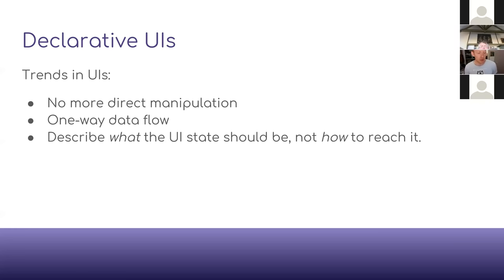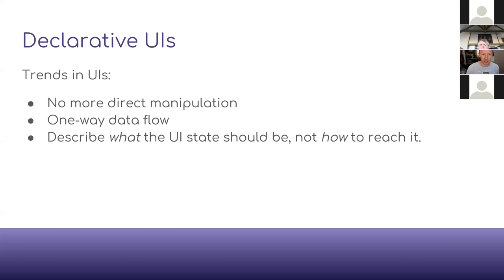My intuition is all about declarative UIs. Here are some trends in UI development recently: we don't want to do direct manipulation of the DOM; we are interested in one-way data flow so our model determines our UI; we don't want two-way binding like in Knockout; we prefer one-way data binding from the model to the rendered DOM. We want to describe what the UI state should be, not how to reach that state — just say 'this is what the DOM should be, please make it so.'